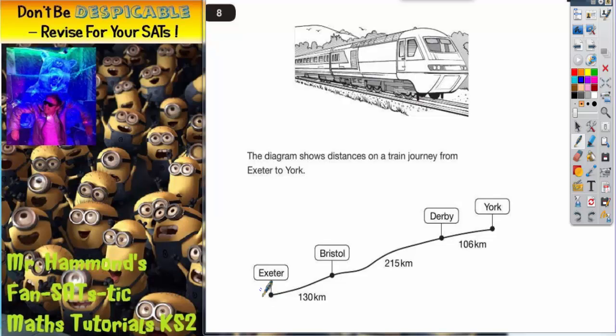And here's the diagram. So Exeter to Bristol is 130 km. Bristol to Derby is 215 km. Derby to York is 106 km.